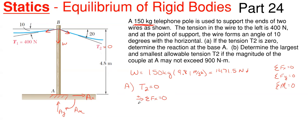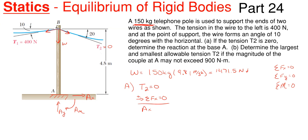For the horizontal direction, summing forces in x equal to zero, taking right as positive and left as negative: we have A sub x (positive, assumed right). W is vertical, A sub y is vertical, the moment is not horizontal, and T2 is zero. The only other term is T1, which has a horizontal component. T1 = 400 newtons acting to the left, so it's minus 400 newtons times cosine of 10 degrees.